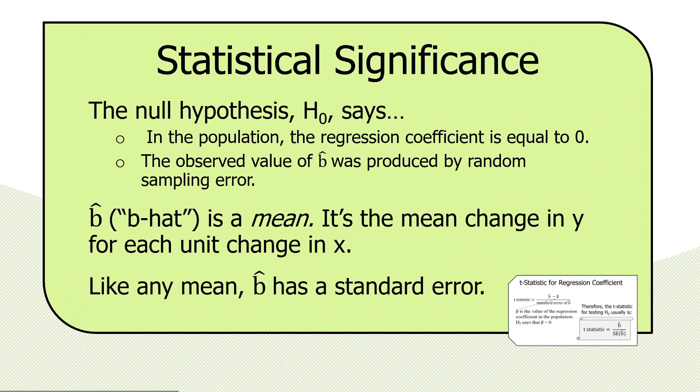The null hypothesis, H sub zero, says this: In the population from which the sample was drawn, the regression coefficient is really equal to zero. This is just another way of saying that the mean difference between two cases that differ by one unit on the independent variable in the population is truly zero. And that the regression is a flat line, as you change x, you do not change y.